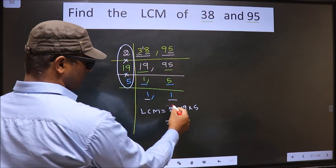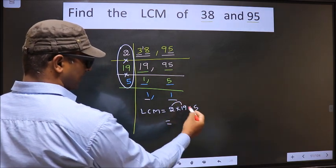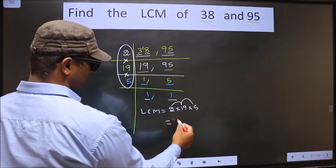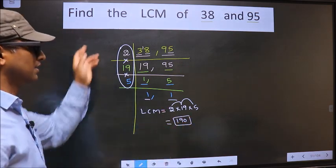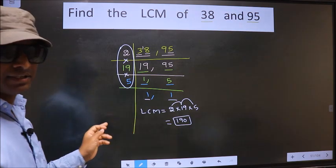That is 2 into 19, 38, into 5, 190 is our LCM. Am I clear?